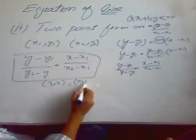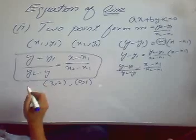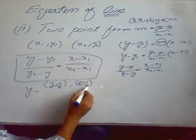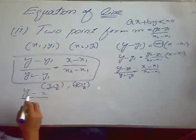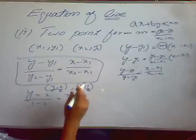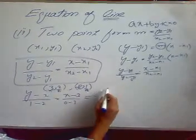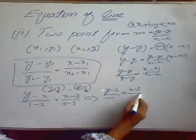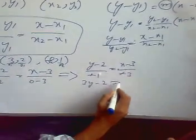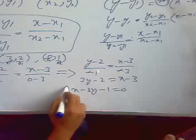Suppose we have two points (3, 2) and (0, 1) and we want to find the equation of the line between them. Here x1=3, y1=2, x2=0, y2=1. Putting values: (y minus 2) over (1 minus 2) equals (x minus 3) over (0 minus 3), which gives (y minus 2) over minus 1 equals (x minus 3) over minus 3. Cross-multiplying: 3(y minus 2) equals (x minus 3), so x minus 3y minus 1 equals 0. This is our required equation of the line.